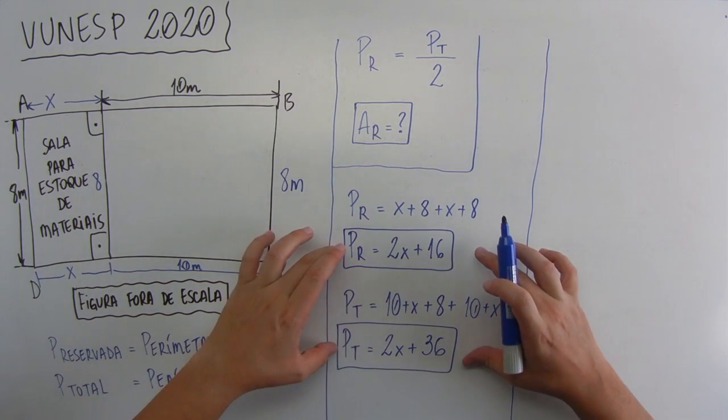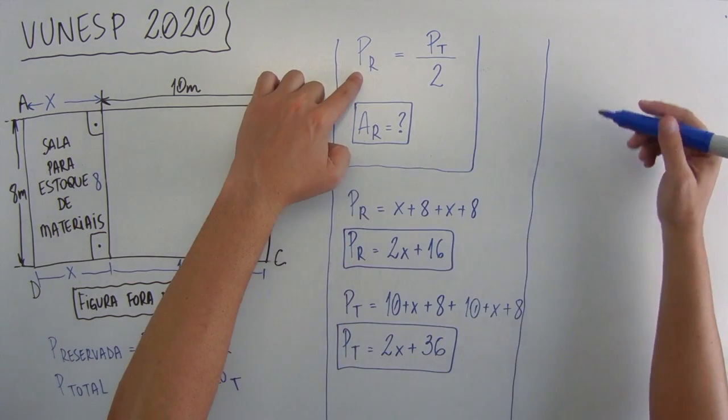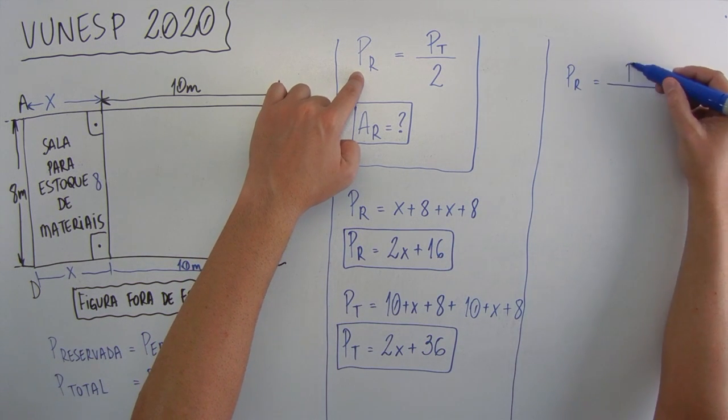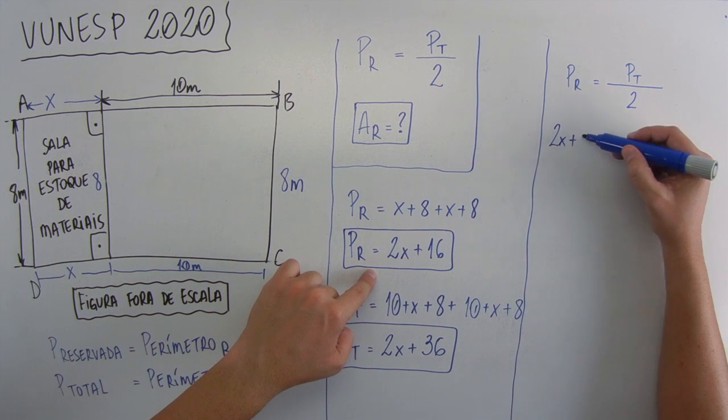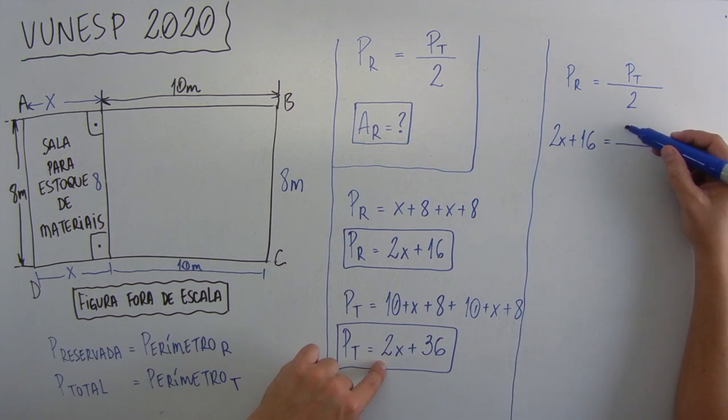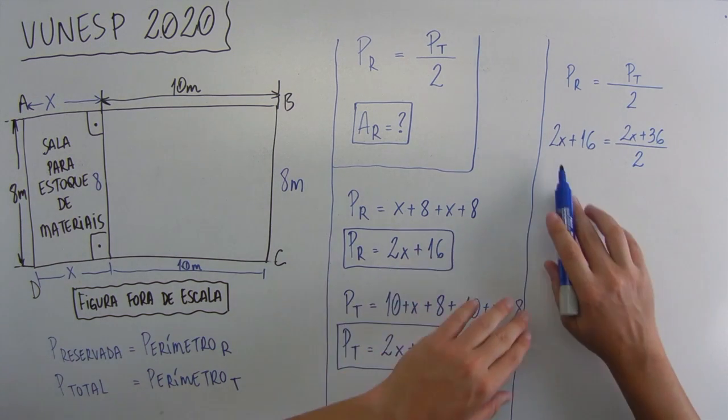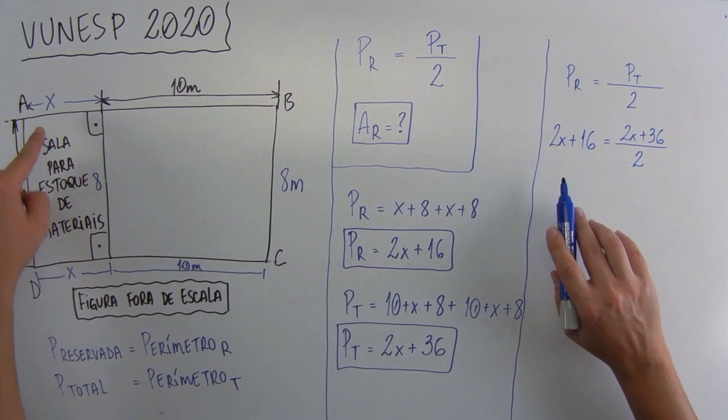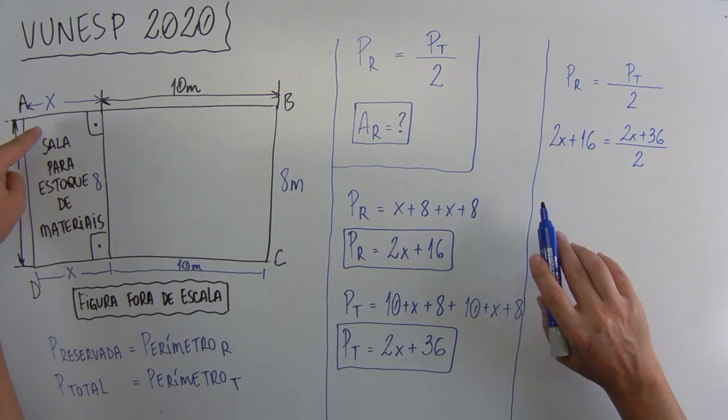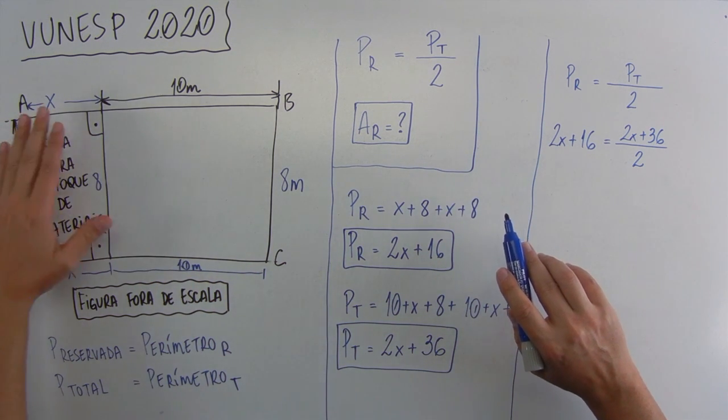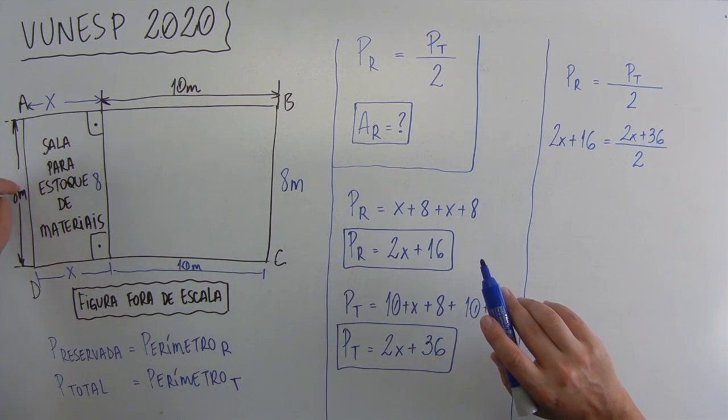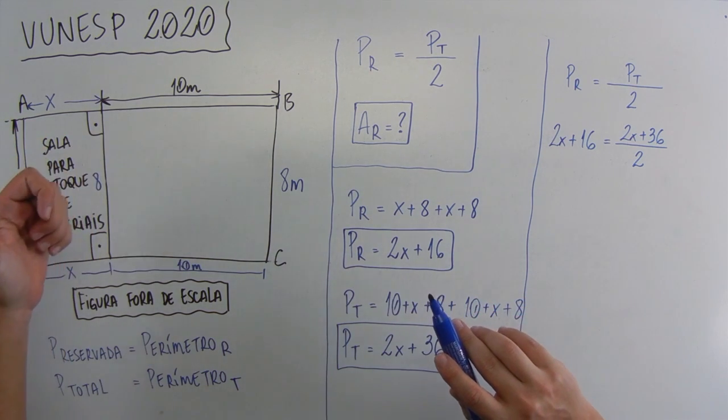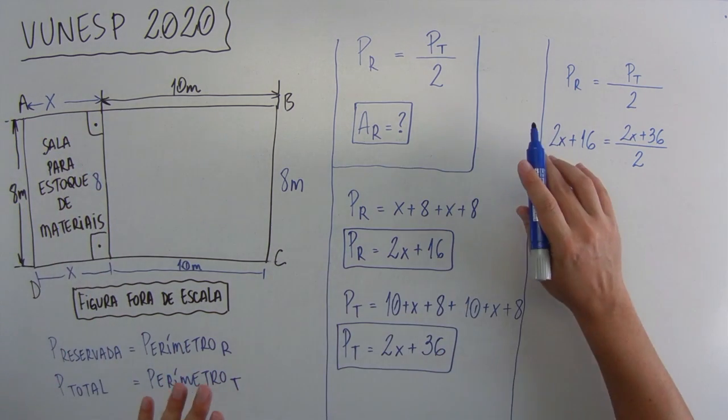Agora, a gente vai colocar esses dois valores aqui em cima. Então, vai ficar PR igual a PT sobre 2. PR vale 2X mais 16. E aqui, PT é igual a 2X mais 36, dividido por 2. Pronto, agora é só descobrir a letra X. Depois que a gente descobrir a letra X, que é essa letra X, a gente vai multiplicar um lado pelo outro, porque isso daqui é um quadrilátero, que todos os ângulos são iguais aqui. Então, para a gente achar a área, é um lado vezes o outro, que é a mesma área do quadrado, que é a mesma área do retângulo.